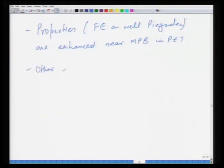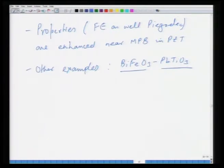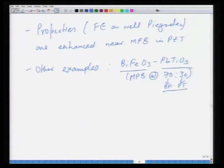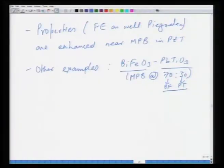This MPB enhancement is also true for other systems, not only PZT. For instance, BiFeO3–PbTiO3 also exhibits an MPB at a 70-30 composition — 70 percent bismuth ferrite and 30 percent lead titanate mole percent. In this system, the transition temperature is reasonably high because the bismuth ferrite transition temperature is much higher than that of lead titanate. Near the morphotropic phase boundary composition, both the piezoelectric coefficient and polarization attain a large enhancement.